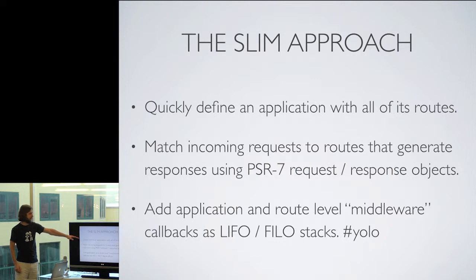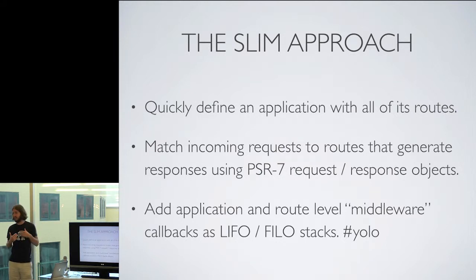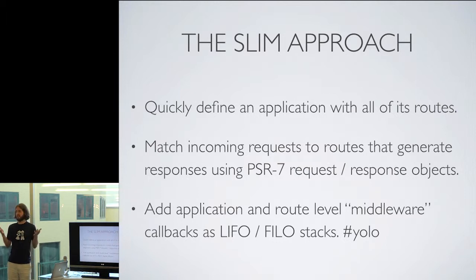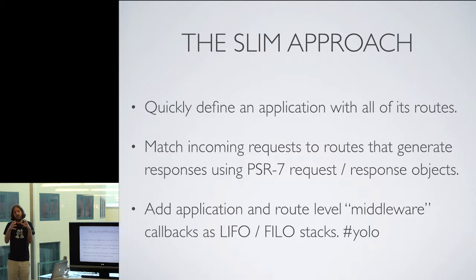The Slim approach is to quickly define an application with all of its routes — we saw Josh do this a couple months ago. It matches incoming requests to routes that generate responses using PSR7 objects. A route would be: slash is the homepage, slash JSON is my JSON route, slash JSON-or-HTML is that route, and so on. Then it has application and route-level middleware, which in design pattern terms creates a chain of command governing what code gets called during the lifecycle of responding to an HTTP request.